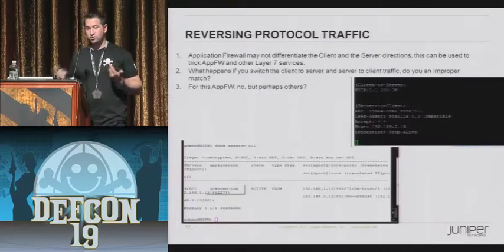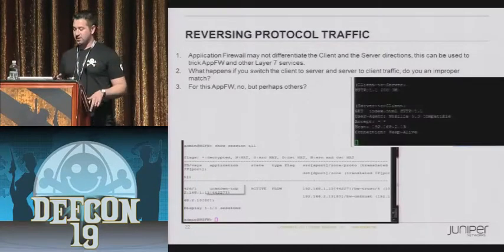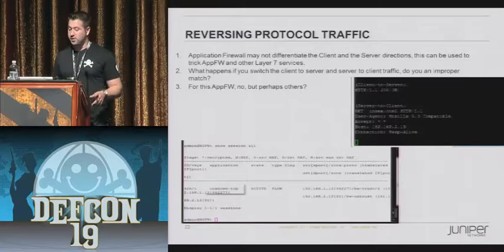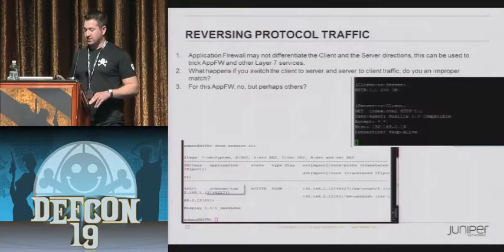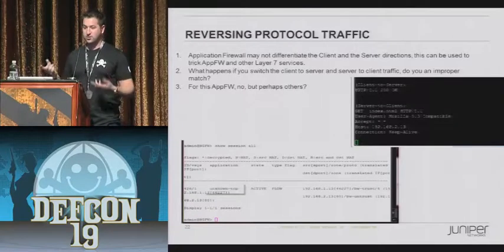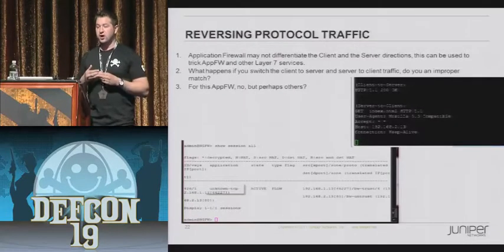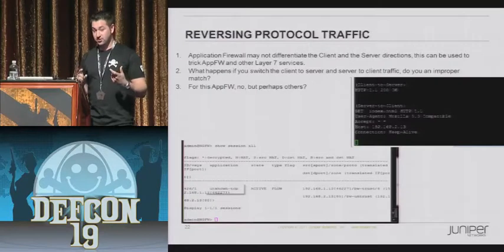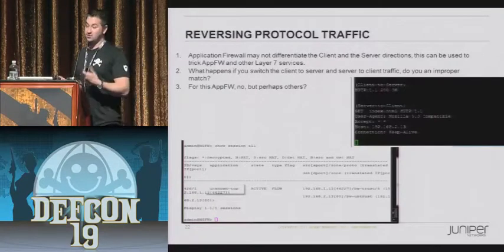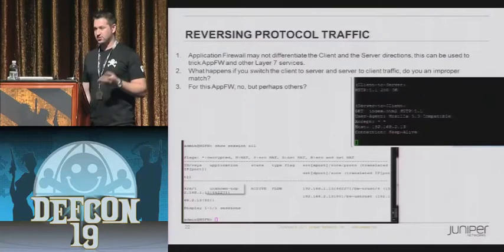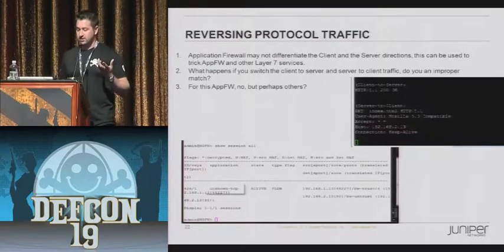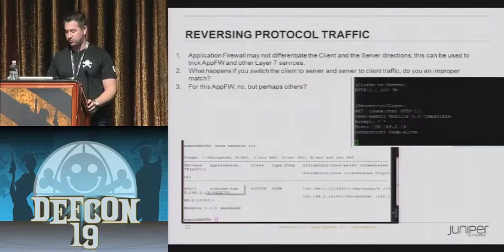What happens if you reverse the direction? This is more of an evasion - not something a normal application would do, but something I had some luck with on some different network application firewall implementations. I sent the same application but reversed the client-to-server and server-to-client, to see if they're looking in both directions and more specifically whether they're looking for the patterns that should be in the client-to-server direction specifically in that direction, or just matching any of these patterns and looking in both directions. On some earlier routing code, they really weren't checking the directions properly - they were looking in one direction or the other, but the patterns weren't differentiated.